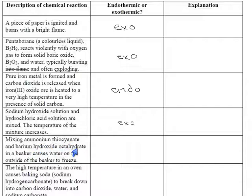Mixing ammonium thiocyanate and barium hydroxide octahydrate in a beaker causes water on the outside of the beaker to freeze. That's the example I was just giving. If the water is freezing and the beaker is getting cold, that would mean the reaction is sucking energy out of the surroundings. That's what we call an endothermic reaction.